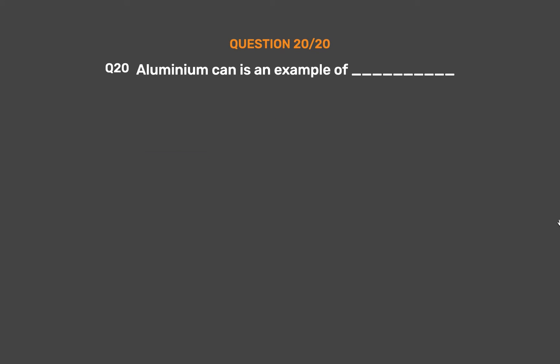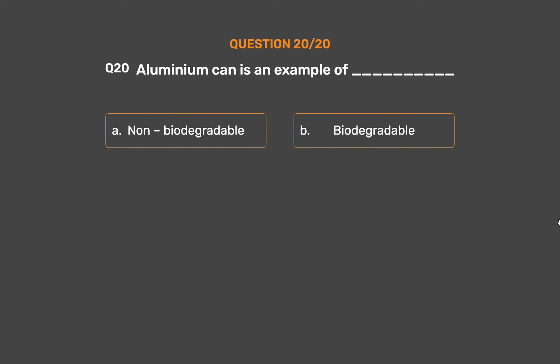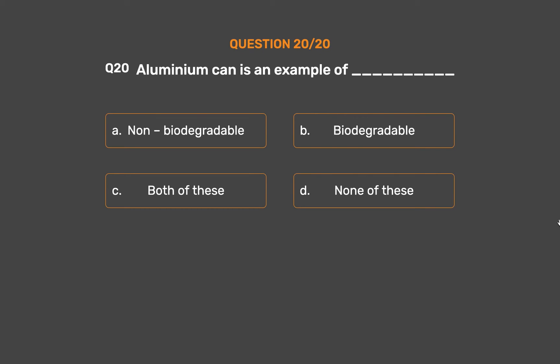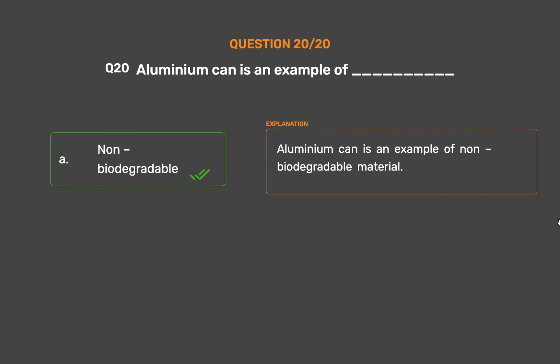Question Number 20. Aluminium can is an example of ___. Option A: Non-biodegradable. Option B: Biodegradable. Option C: Both of these. Option D: None of these. The correct answer is Option A: Non-biodegradable. Aluminium can is an example of non-biodegradable material.